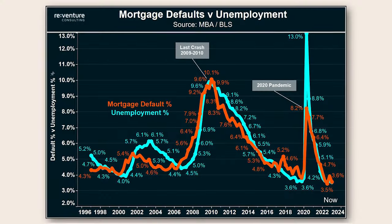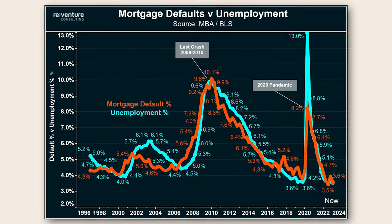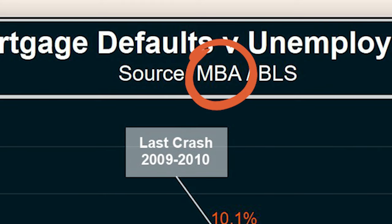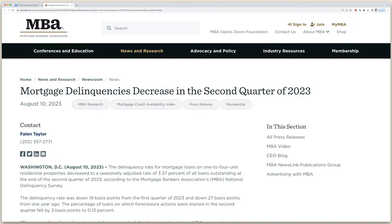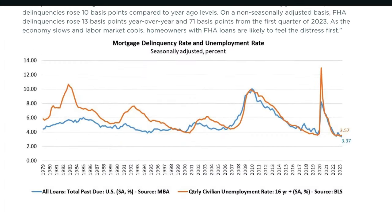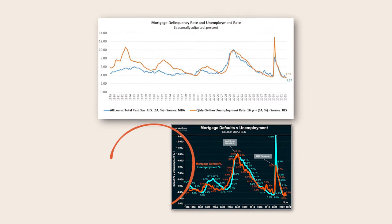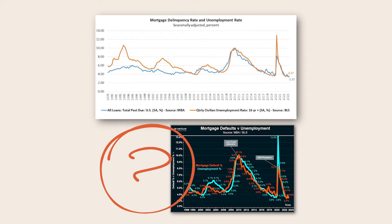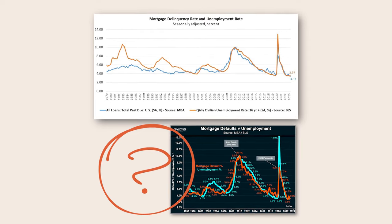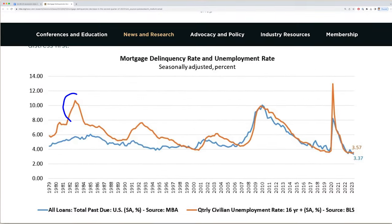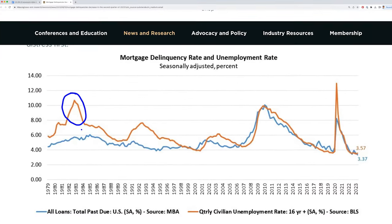Here's the thing, though. Nick gets this data from the MBA, the Mortgage Bankers Association, which publishes their own version of this graph every quarter as part of their quarterly delinquency report. Let me put both graphs up together — do you notice the difference? Nick deletes 1979 through 1995 from the original MBA graph, hiding the fact that when unemployment skyrocketed in 1983, mortgage defaults barely grew.